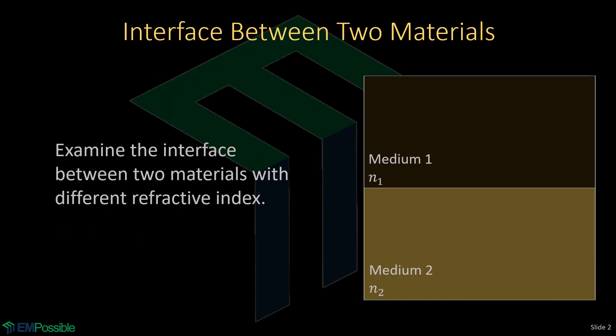Let's look at a simple case where we have the interface between two different materials that have two different refractive indices. So we have medium 1 with refractive index N1 and medium 2 with refractive index N2. This is the classic setup for analyzing Snell's Law of Reflection and Refraction.